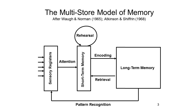Items in short-term memory can be maintained there indefinitely by means of another control process known as rehearsal. Think of the telephone number example — you look up a telephone number and then repeat it to yourself over and over again until you get a chance to write it down or dial it. That's what rehearsal is like. You stop rehearsing the number and pretty soon it disappears from memory. But by means of yet another control process known as encoding, information can be transferred from the relatively temporary short-term memory to the permanent repository of stored knowledge known as long-term memory. And finally, by means of retrieval, information can be transferred from long-term memory to short-term memory.